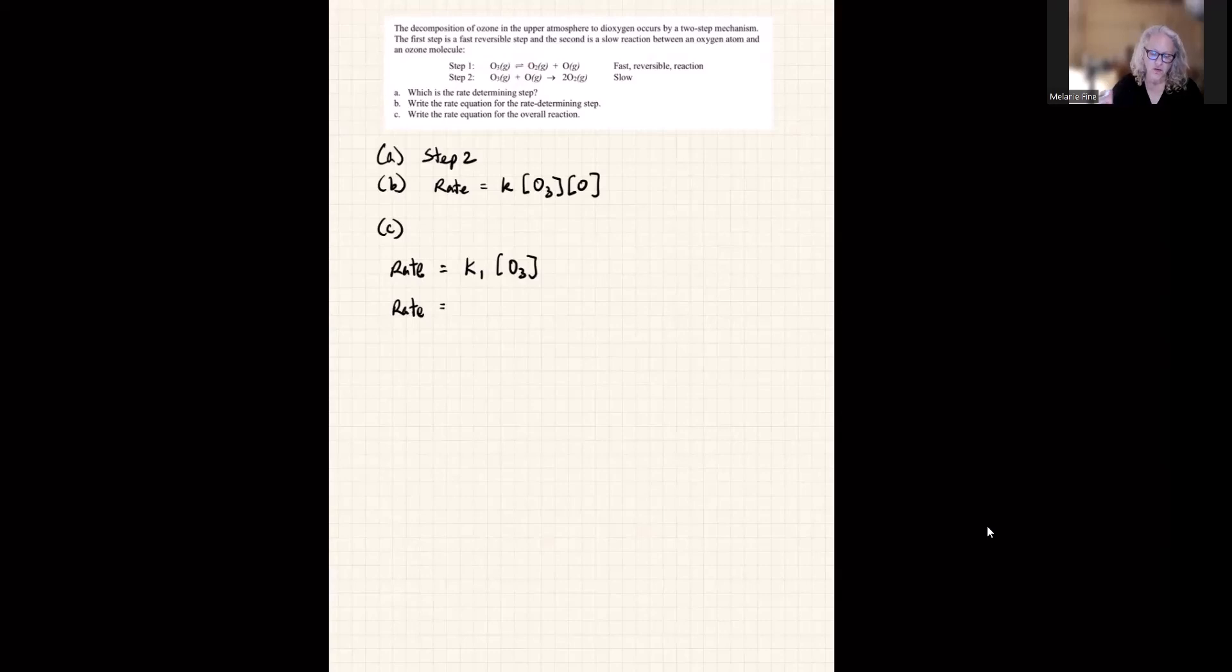At equilibrium, the rate of the forward reaction is equal to the rate of the reverse reaction. The rate of the reverse reaction, I'll call K negative 1, is the concentration of O2 times the concentration of O. So my overall plan for this is to figure out, well, to solve for the variable O, and then I'm going to substitute that into here.